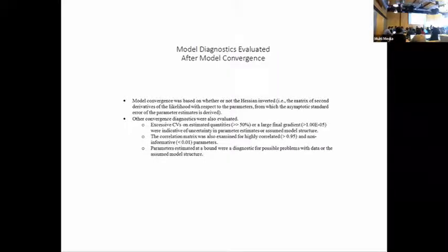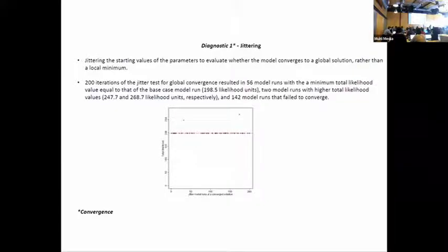We assume that the model has converged and you've checked the diagnostics in the usual way. The first thing to do is just make sure the Hessian inverts. I've been looking at if there's excessive CVs or highly correlated or uncorrelated parameters or parameters on bounds. We did all of our modeling in Stock Synthesis and R4SS will put this stuff out in the plot so you can basically look at this as you're running your models. In addition to that, the jitter is useful to run.